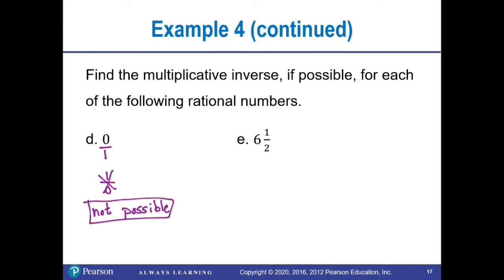For part E, we have six and one-half. To find the multiplicative inverse of a mixed number, first change it to an improper fraction. Six wholes with denominator two: six times two is twelve, plus one more part, gives thirteen over two. The multiplicative inverse of thirteen over two is two over thirteen.